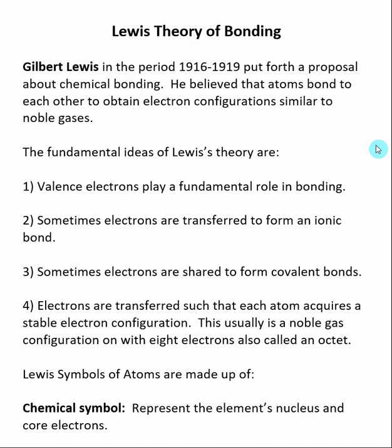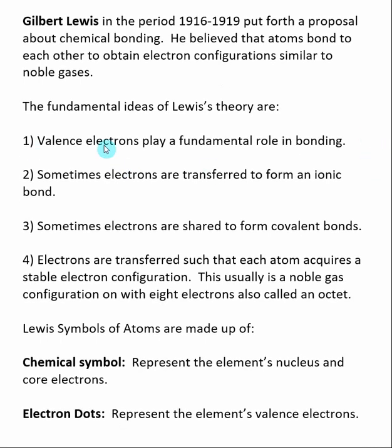The basic ideas of Lewis's theories are: really it's the valence electrons that play the important role in bonding. Remember we had core electrons and then valence electrons. The core electrons were part of the noble gas core, and the valence electrons were past the noble gas core. It's really those valence electrons that are going to be involved in bonding.